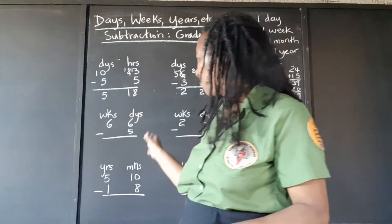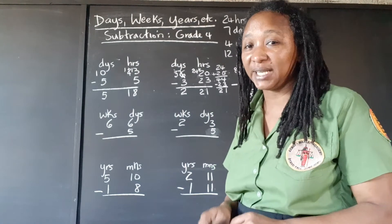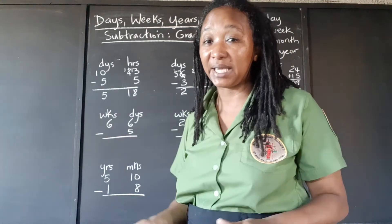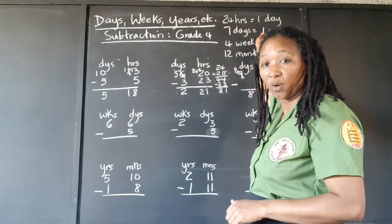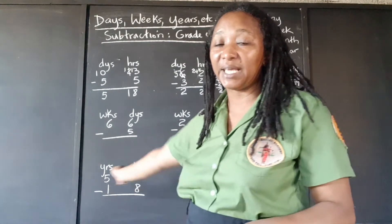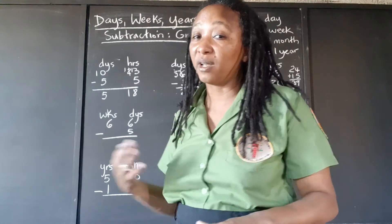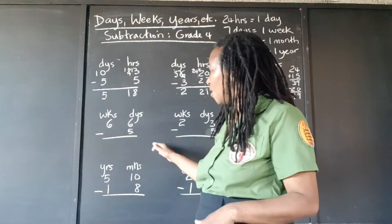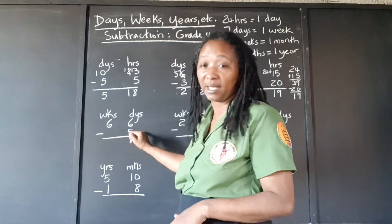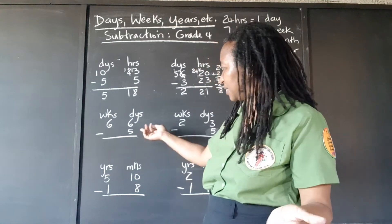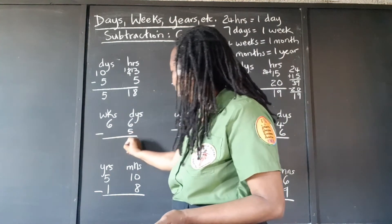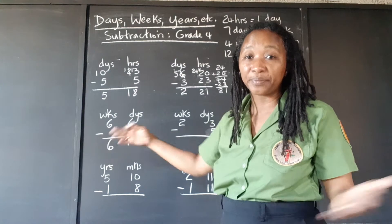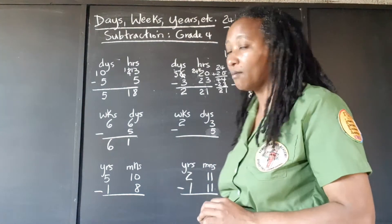The same principle applies for weeks and days, with the exception that if we're taking one week, we carry it over as 7 days, because 7 days make 1 week. So for example: we have 6 weeks 6 days and we're taking away 5 weeks. We have enough because we're just taking 5 from 6 weeks, so that's 1 week. And we carry over only 6 days because there are no days to subtract.